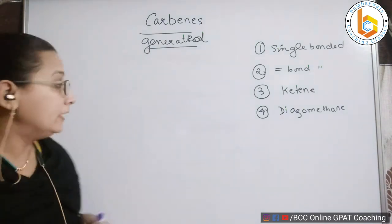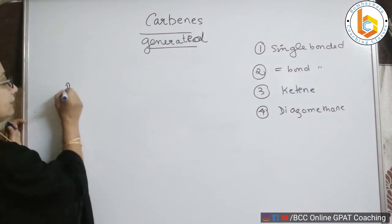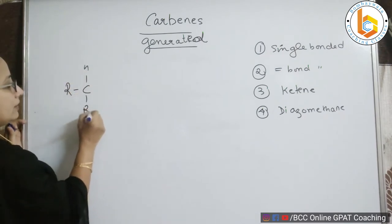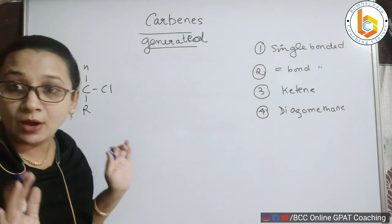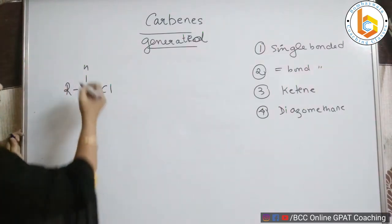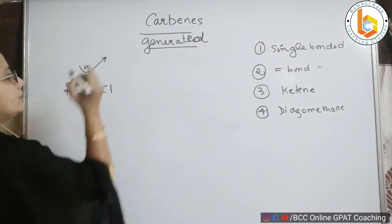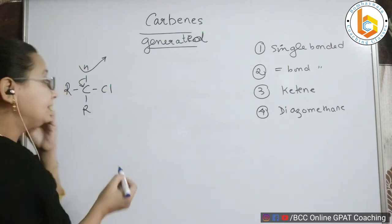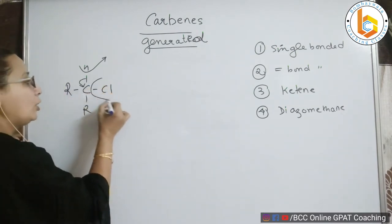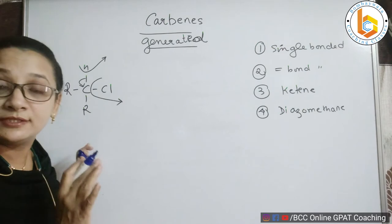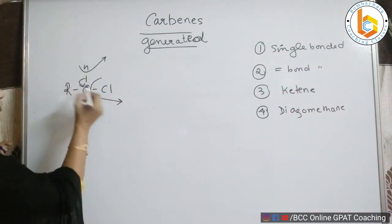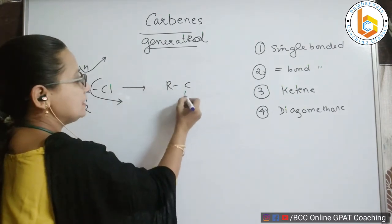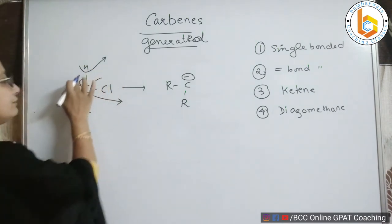For an alkyl halide, say CHR₂Cl for example, here is how I am going to synthesize carbene. What will happen first is that H will leave the system as a proton — meaning it gives its electrons to this carbon — and chlorine will leave the system along with its electrons, because halogen is highly electronegative. The proton gives the electrons and chlorine goes along with its electrons.